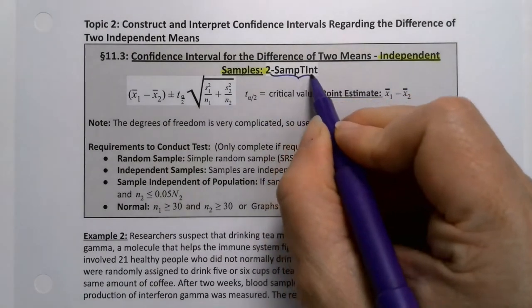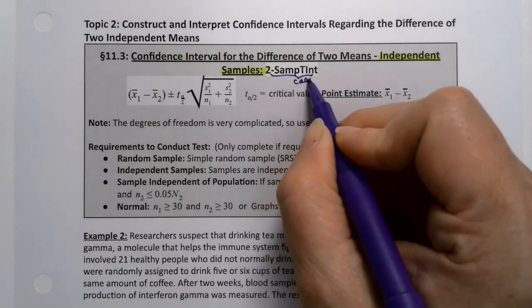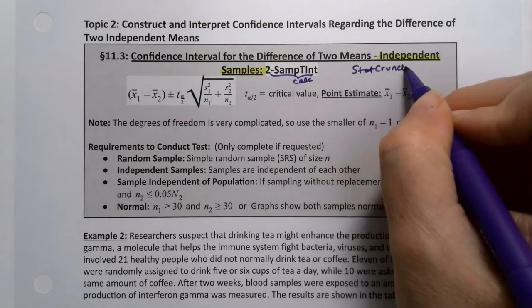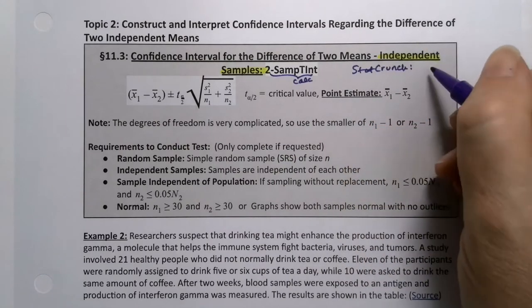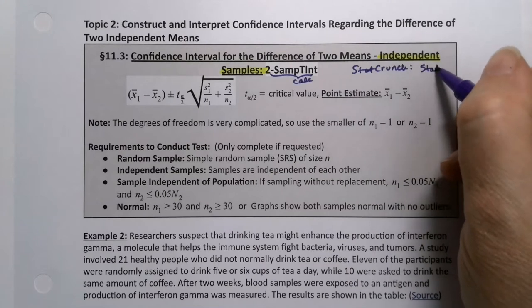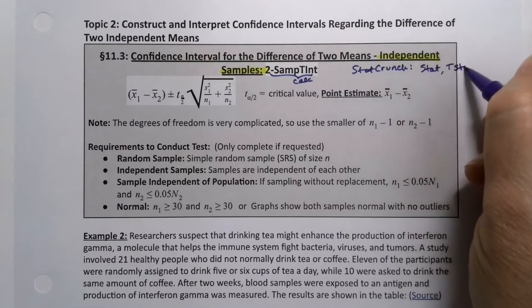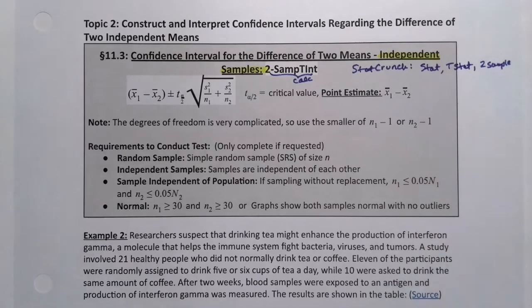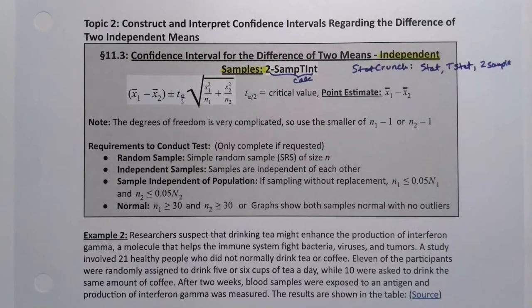On StatCrunch, you go the same place you went before. On StatCrunch, you go to the same place every time, which is nice for that particular type of problem. So you go to Stat, you go to T-Stat, and then you pick 2-sample. Whether you choose with summary or with data depends on the problem, but that's where you're heading.